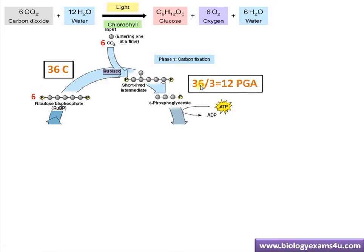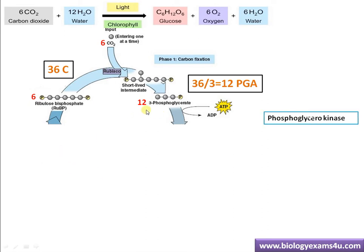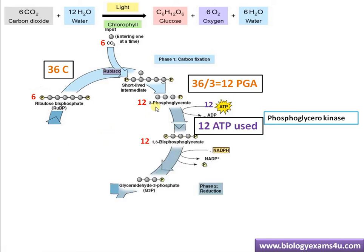The 36-carbon intermediate then forms the first stable compound, which is 3-phosphoglycerate (3-PGA) or 3-phosphoglyceric acid. Since 3-PGA is a 3-carbon compound, 36 ÷ 3 = 12 molecules of 3-phosphoglycerate are formed. The first stable compound formed in the Calvin cycle is 3-phosphoglycerate — that is why the cycle is called the C3 cycle. So now we have twelve 3-phosphoglycerate molecules.